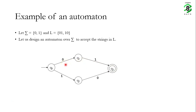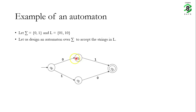Let us look at this machine and see what words it accepts. Starting from the initial state, if I get a 0, I go to Q1, and from Q1, if I get a 1, I go to Q3, which is the accepting state — so it accepts the word 01. Similarly, from Q0, if we get a 1, we go to Q2, and from Q2, if we get a 0, we reach Q3 — so it accepts the word 10. Would it accept a word like 00? If I get 0 from the initial state I go to Q1, and if I get another 0, the machine does not go anywhere, so it won't accept. The machine reaches the final state only with the words 01 and 10, and accepts no other word.